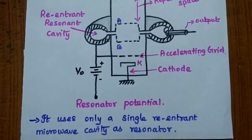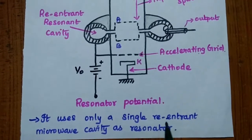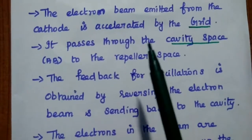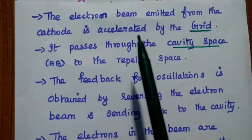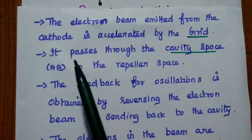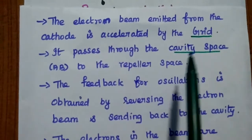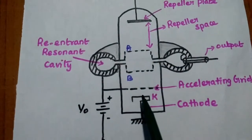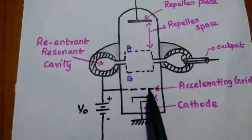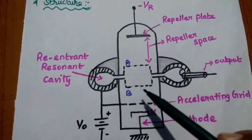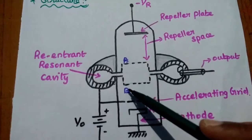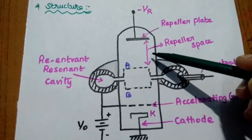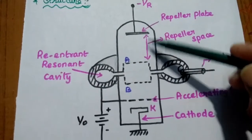The reflex klystron uses only a single re-entrant microwave cavity as a resonator. The electron beam emitted from the cathode is accelerated by the grid. It passes through the cavity space to the repeller space. The electron beam generated from the cathode is accelerated by the accelerating grid, passing towards the cavity space — from A to B is the cavity space — and then moving towards the repeller space.